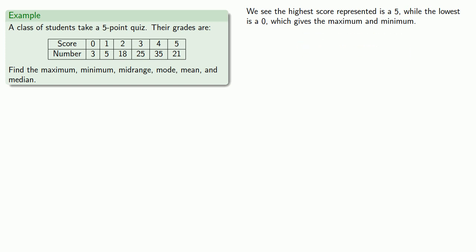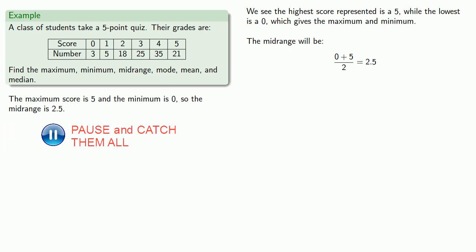Once we have the maximum and minimum, we can find the midrange. Remember, the mode is the most common value, and according to our table, we see that the most common value is four, which appears 35 times, which is more than anything else.